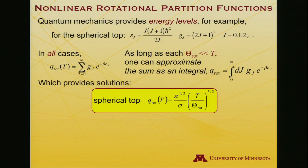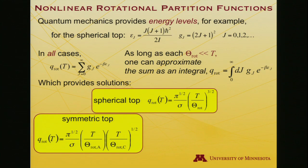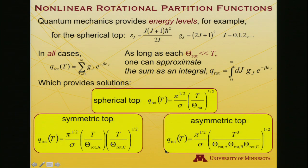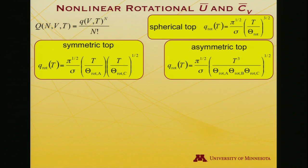And in this case, the symmetry number may take on values other than 1 or 2. And it just depends on the nature of the molecule. A symmetric top has a T over theta rotation for the two rotational temperatures that are equal to one another because the moments of inertia are equal to one another. And that's raised to the first power, we might say. And then there's a 1 half power for T over the other rotational temperature. And again, a pi to the 1 half power out front. And finally, in the asymmetric top, there is this expression, T cubed, the product of all the rotational temperatures, all to the 1 half power, if you will.